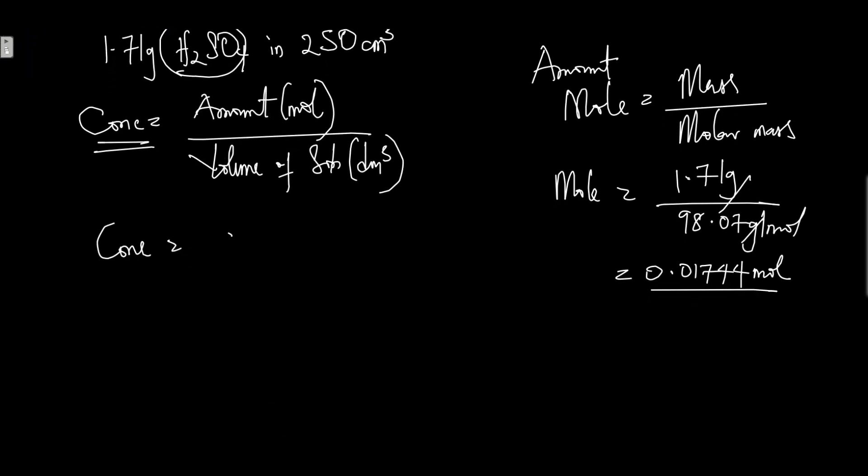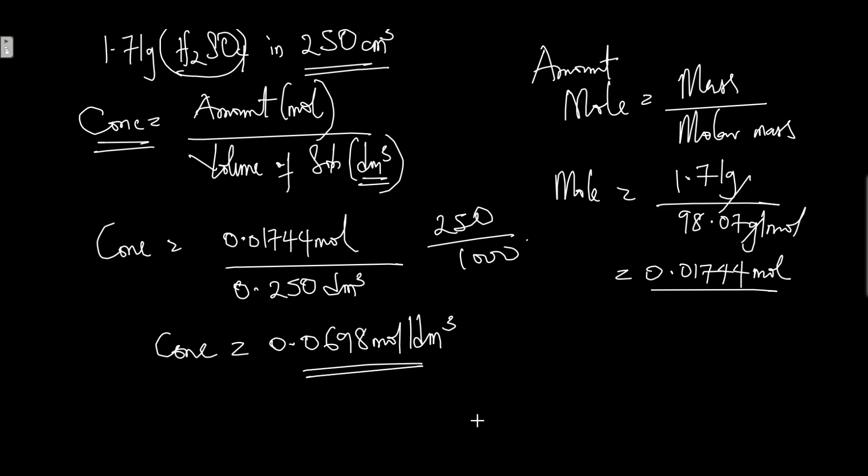Concentration equals the amount 0.01744 mole over the volume 250 cm³. Take note, the volume is in dm³. To convert cm³ to dm³, we divide by 1000, giving 0.250 dm³. Dividing this, the answer becomes 0.0698 mol/dm³ as the concentration of AN.